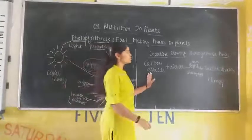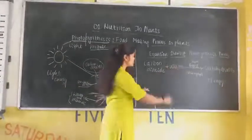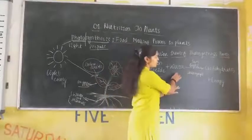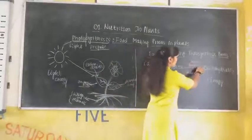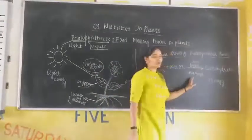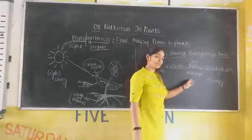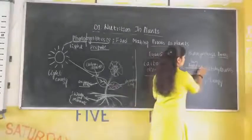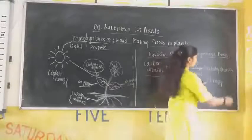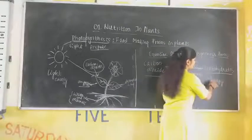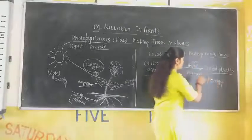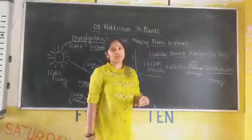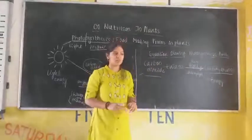The equation showing the photosynthesis process is: carbon dioxide plus water, in the presence of sunlight and chlorophyll — the green colour pigment present in the plants — produces carbohydrates and energy. This is the equation representing the photosynthesis process.